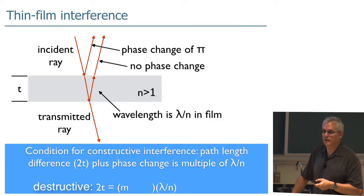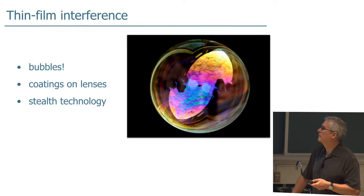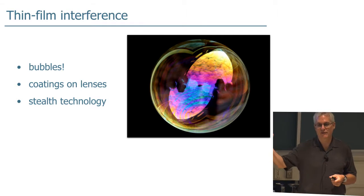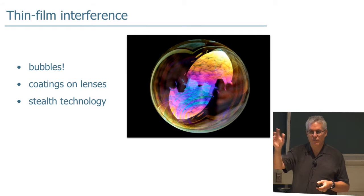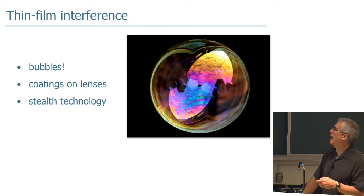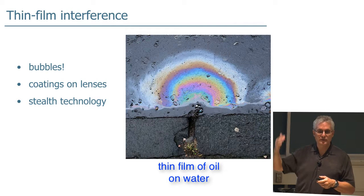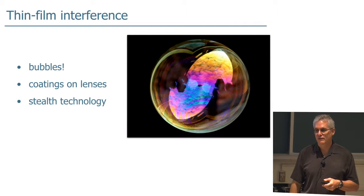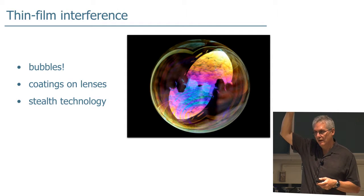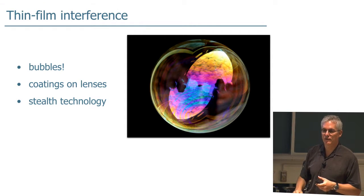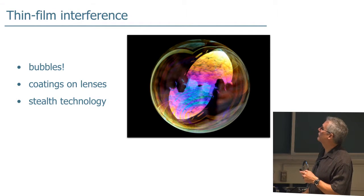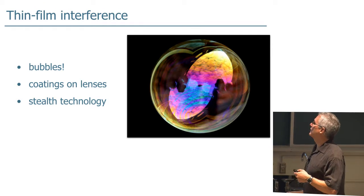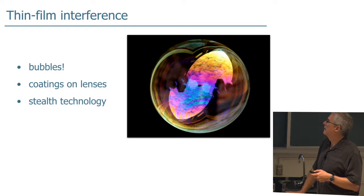Thin film interference is actually kind of a useful thing. Also, it's one of those things that takes the mystery out of life a little bit. For example, when you see a bubble floating in the air, and there's white light hitting the bubble, when you see the bubble, you see sort of a rainbow pattern. Why is that? Different frequency components, different wavelength components of the white light reflect at different angles from the thin film, which is the soap bubble. The reflected rays are interfering with each other constructively for certain wavelengths at certain angles, and you could work out what those angles are. So now we understand why bubbles have the nice rainbow patterns on them.